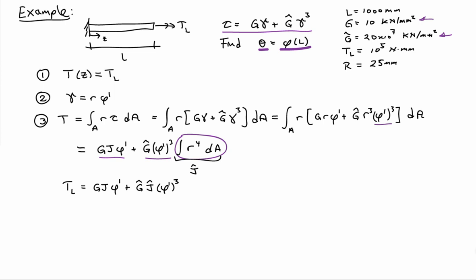So if I plug in for the torque at any cross-section, I find out that TL is equal to GJ phi prime plus G hat J hat phi prime cubed. And I know what TL is. That's a given. I know what G, J, G hat and J hat are just from the given information. So here I have a cubic polynomial that I can solve for phi prime.